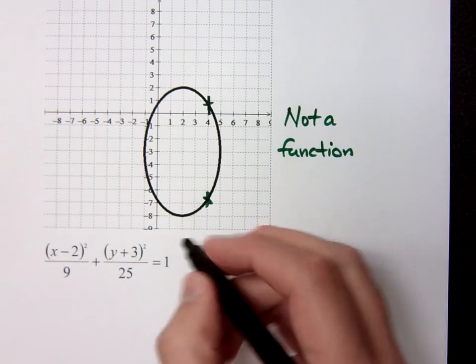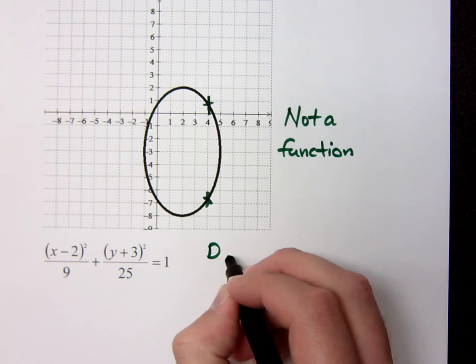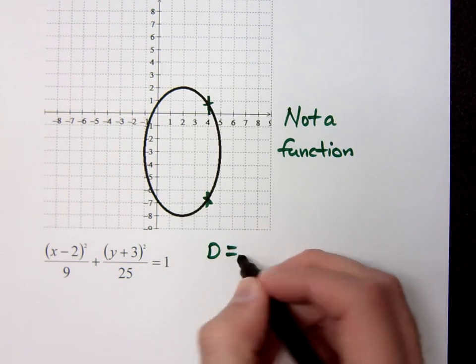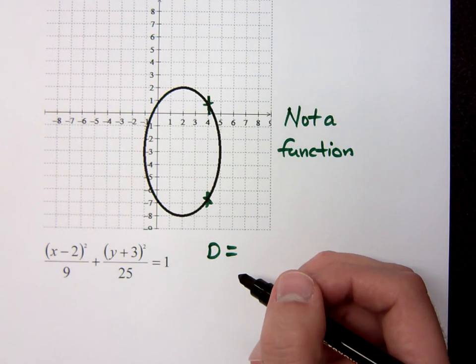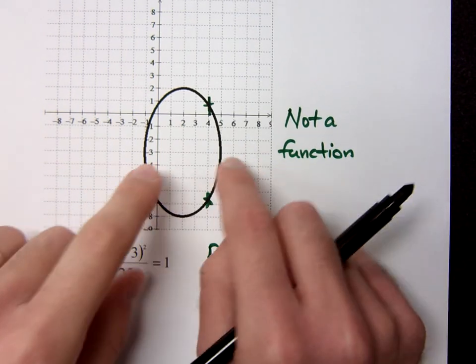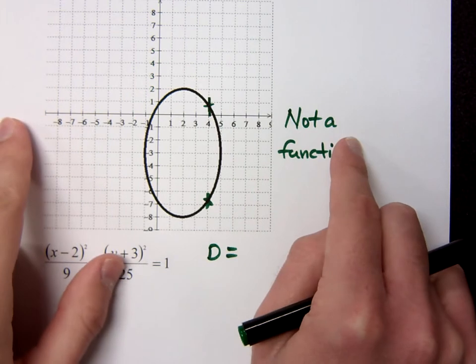What's its domain, though? I want the set of the X values that are being used here. I'm not using everything. Because notice this guy doesn't extend out on both sides, does it?